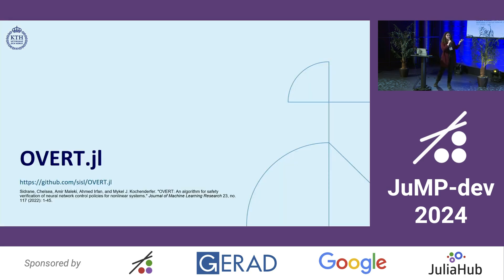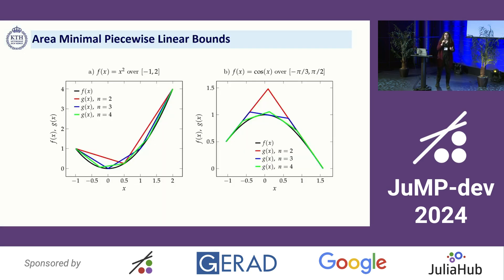Also during my thesis, I developed overt.jl, a sub-package to OverVerify, which addresses the first of these problems by computing area-minimal piecewise linear bounds for essentially arbitrary nonlinear functions of any dimension. I won't go into the details, but we can discuss later, and I have a paper on it if you have questions.